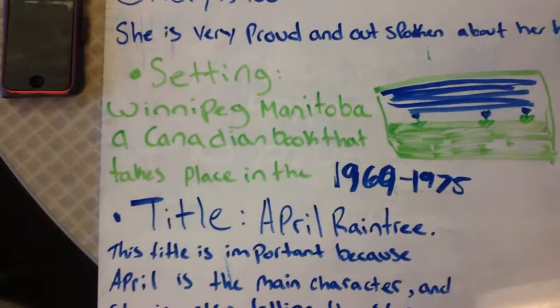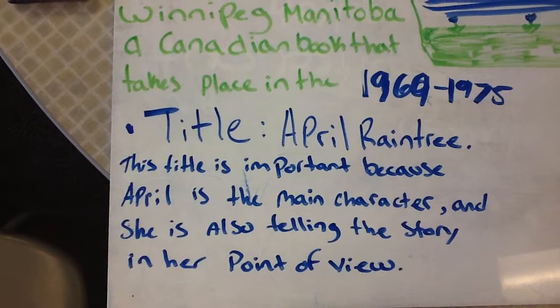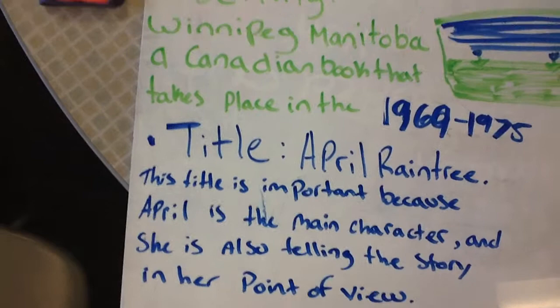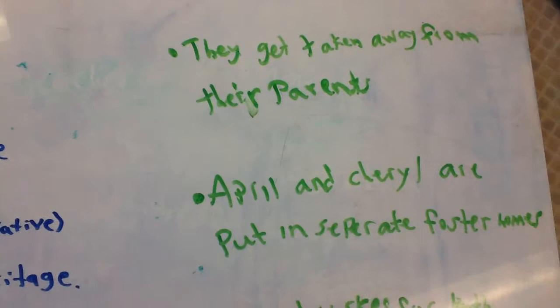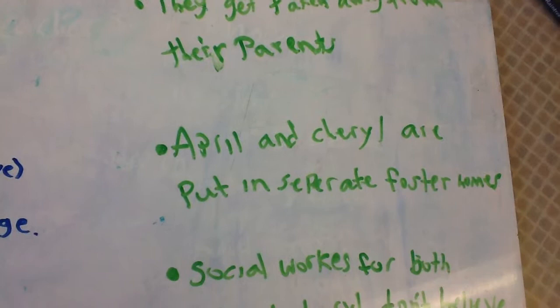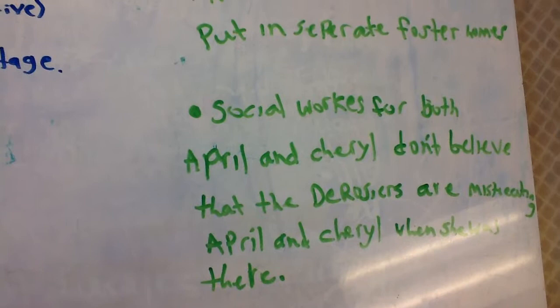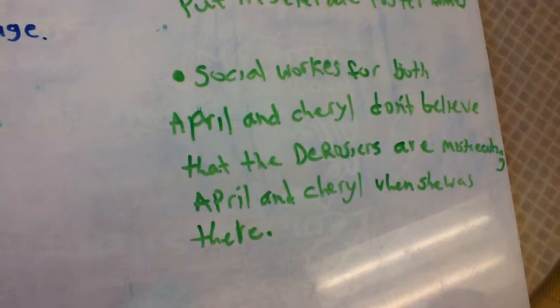The title is April Raintree, and it is important because April is the main character and she is also telling the story in her point of view. The three key plot events are: April and Cheryl get taken away from their parents; April and Cheryl are put into separate foster homes; and both April and Cheryl's social workers don't believe that they're being mistreated when they're put in the Dorosers' foster home.